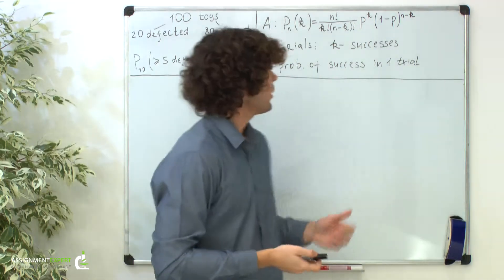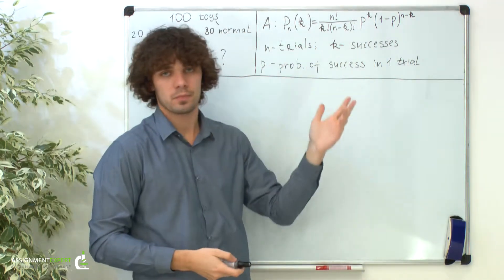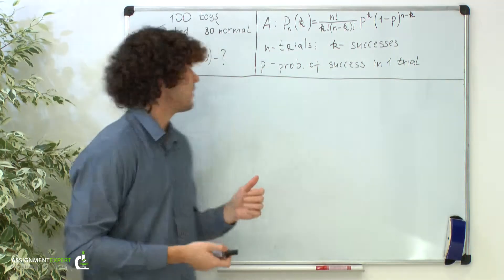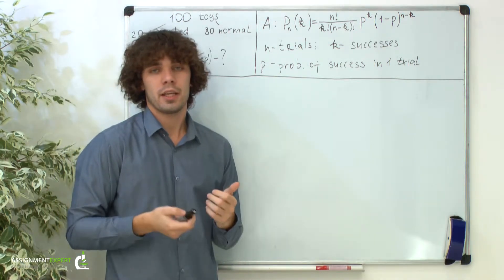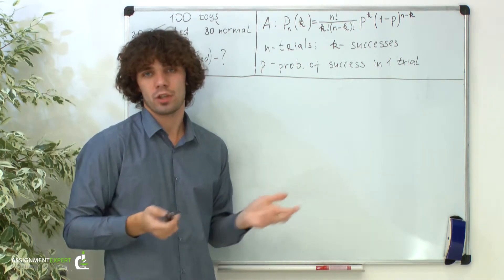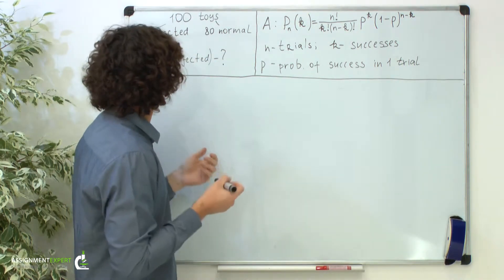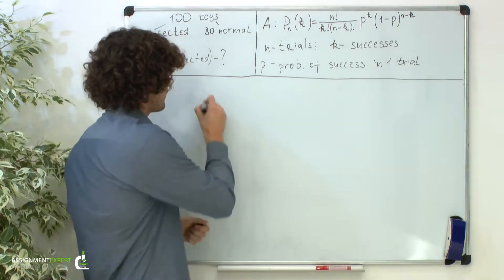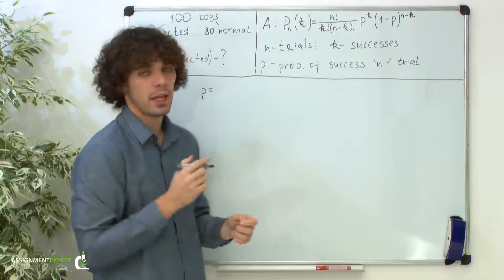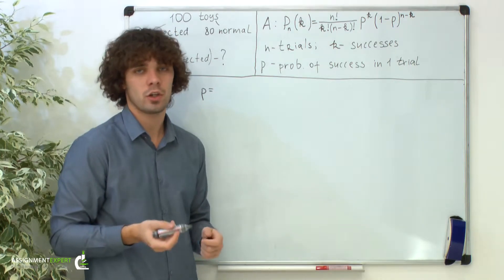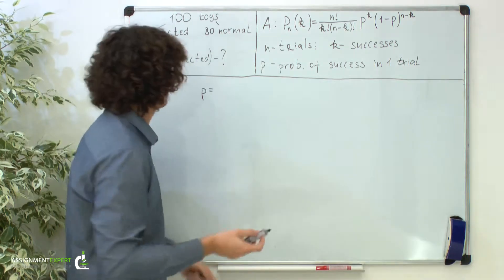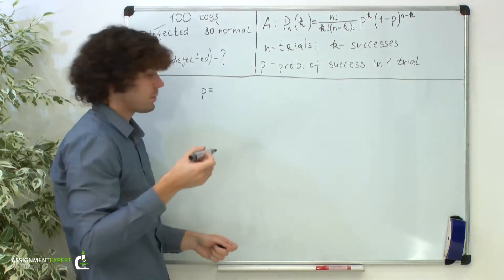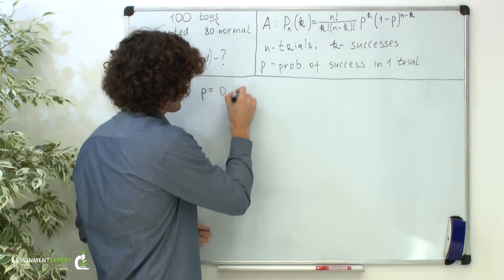Here we will use the Bernoulli formula. Let's denote that success in our case is getting a defective toy, and failure is getting a normal toy — we take this just for convenience. So first we need to find the probability that a toy is defected. By the classical definition of probability, the probability of any event is the number of outcomes when this event occurs over the total number of outcomes. So here we have 20 defected toys among 100 total, so this probability equals 0.2.